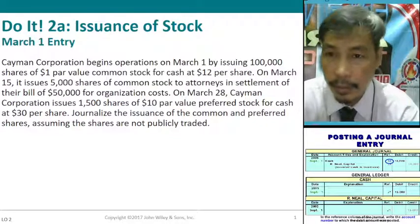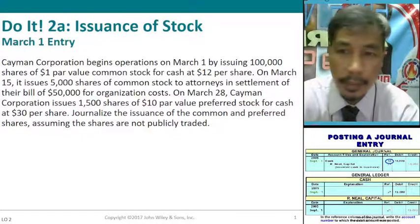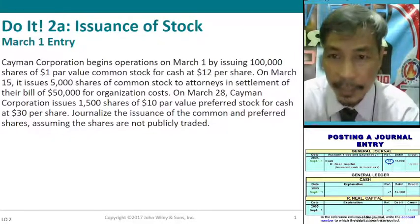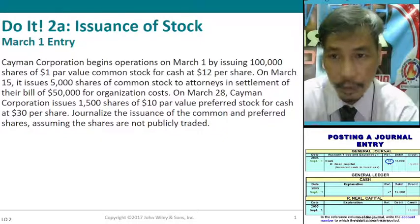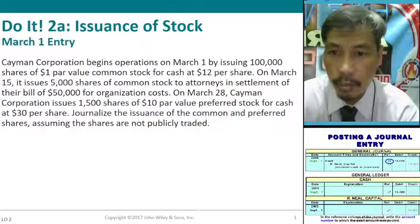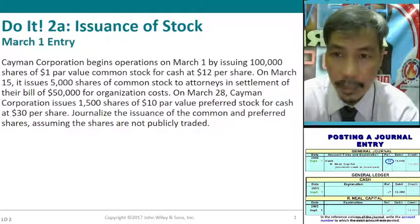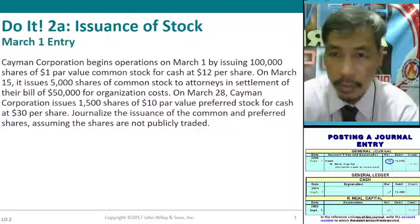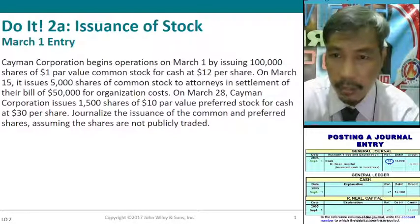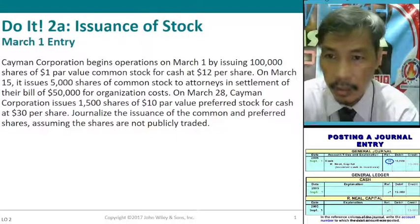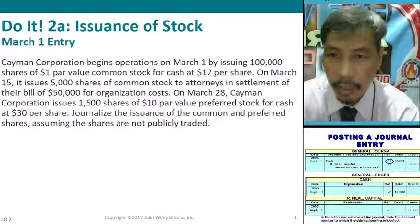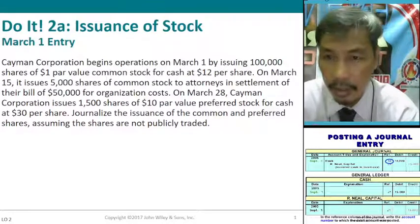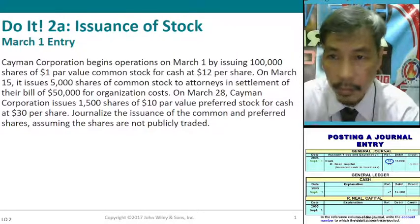In this video, we apply our knowledge from Lesson 2 of Chapter 11. Problem 1: Cayman Corporation begins operations on March 1 by issuing 100,000 shares of $1 par value common stock for cash at $12 per share. On March 15, it issues 5,000 shares of common stock to attorneys in settlement of their bill of $50,000 for organization costs. On March 28, Cayman Corporation issues 1,500 shares of $10 par value preferred stock for cash at $30 per share.